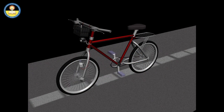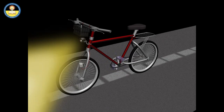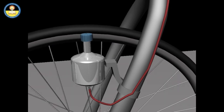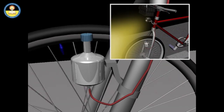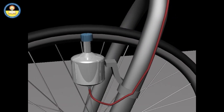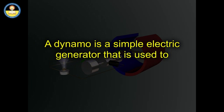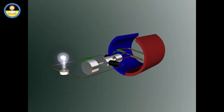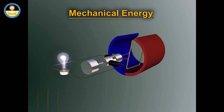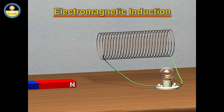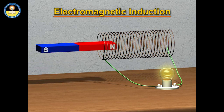Have you seen a dynamo fitted onto a bicycle to provide electricity to its headlight? When a dynamo is attached to the tire of a bicycle, a knob at the top of the dynamo touches against the rim of the tire, which rotates when the bicycle is moving. The electrical energy produced by the dynamo depends upon the speed of rotation of the knob — the faster the knob rotates, the more the electrical energy output. In general, a dynamo is a simple electric generator used to generate electricity. In an electric generator, mechanical energy is used to rotate a conductor in a magnetic field to produce electricity. Based on electromagnetic induction, an electric generator produces large currents for use in homes and industry.